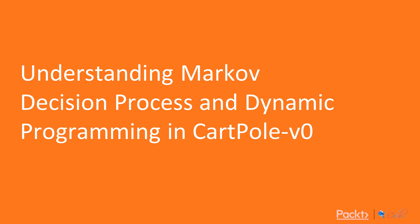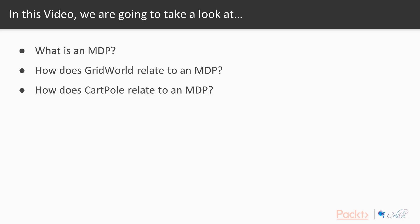This video is Understanding Markov Decision Processes and Dynamic Programming in CartPole V0. We're going to take a look at what a Markov Decision Process is. The goal here is to formalize what we've learned in sections 1 to 5 so we can have a good base for sections 6 to 8. To ground this abstract concept of MDPs, we then relate both GridWorld and CartPole V0 to MDPs.